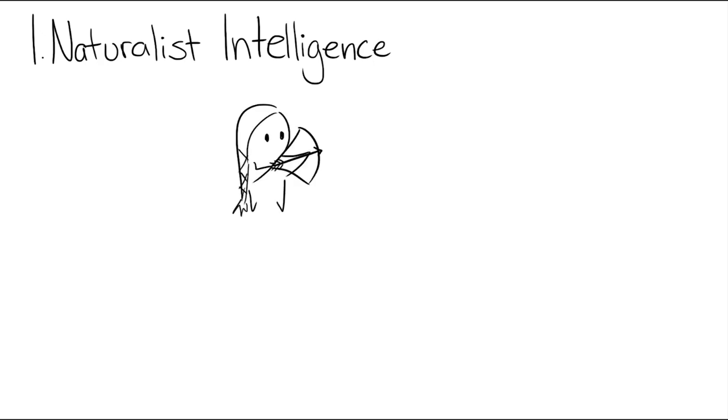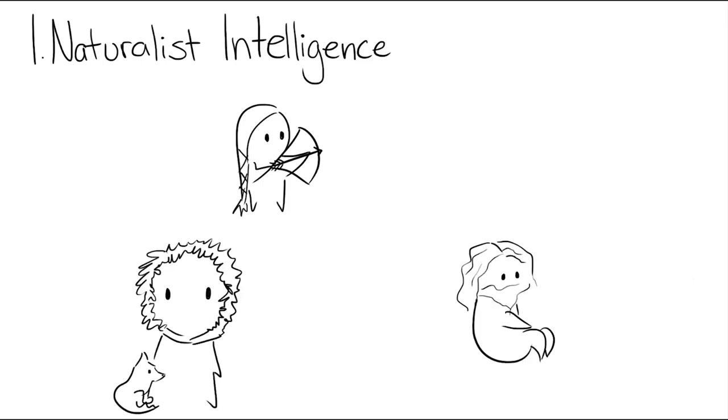Number one, naturalist intelligence. Think of Katniss Everdeen from The Hunger Games, Chuck Noland from Castaway, and Julie from Julie of the Wolves. With a keen eye to detail and easily noticing changes in their surroundings, people with high naturalist intelligence would be very good at surviving in the wild.